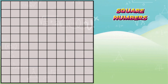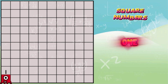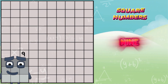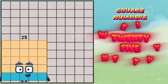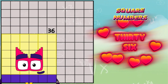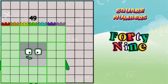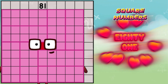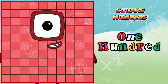Let's check out square numbers: one, four, nine, sixteen, twenty-five, thirty-six, forty-nine, sixty-four, eighty-one, one-hundred. Yay!